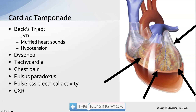Not every patient with tamponade has muffled heart sounds, but it is a pretty good classic sign. Other signs include dyspnea, tachycardia, chest pain, and pulsus paradoxus. Pulsus paradoxus occurs because pressure around the heart won't allow it to fill. When the patient takes a breath in, the lungs get bigger, putting even more pressure on the heart, causing blood pressure to drop due to less filling. As the patient exhales, blood pressure starts to go back up. This is very pronounced in tamponade.